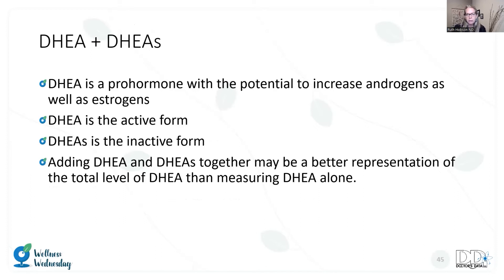Unique to Doctor's Data, we have the ability to measure DHEA and DHEA-S, and also a marker adding DHEA and DHEA-S together. DHEA is a pro-hormone — I think about it as potential — it has the ability to increase both androgens and estrogens, making it an important piece of the hormone story. DHEA is the active form while DHEA-S is the inactive form. Adding these together gives the practitioner a better idea of the total pool available — what's the potential for this pro-hormone?